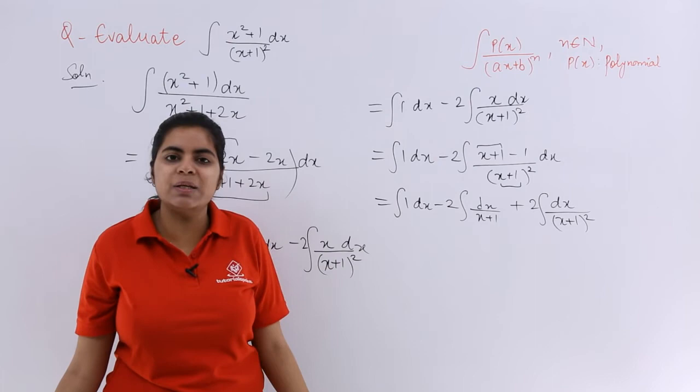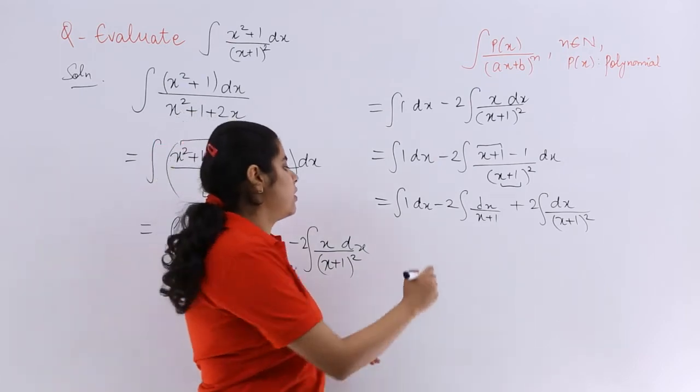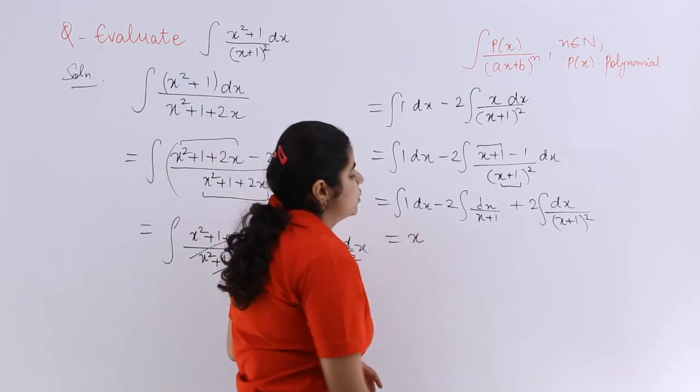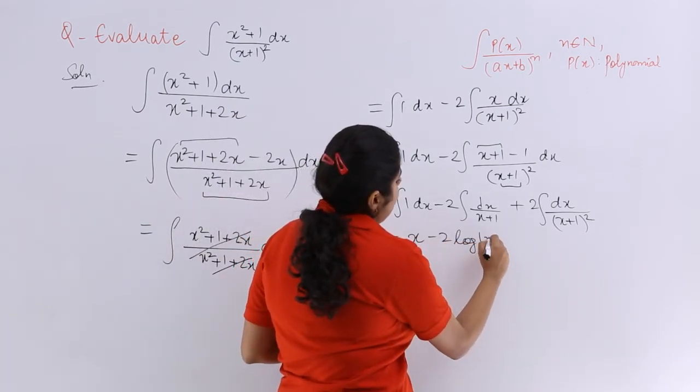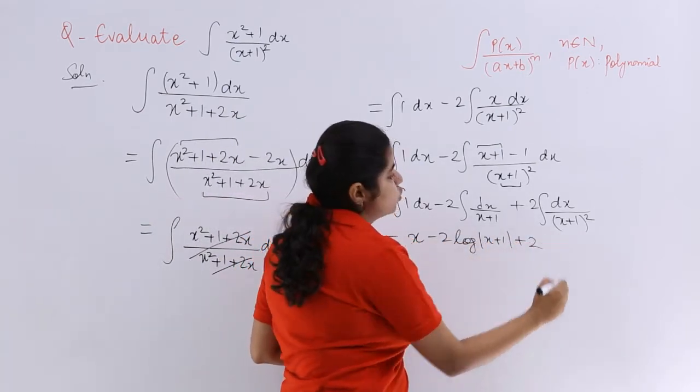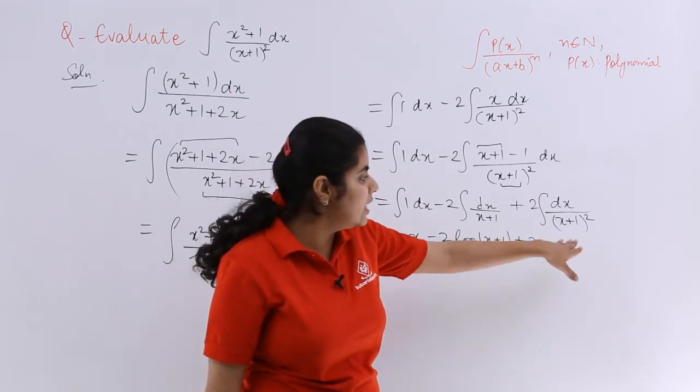Now what is it? The last steps of the question. Directly we can solve. Integration of 1 with respect to dx is x, minus 2 log (x + 1), plus 2. Then what is it?